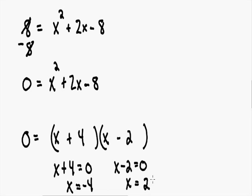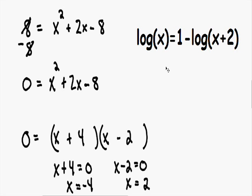So we have x = -4 and x = 2, but are these both valid solutions? We need to double check that these solutions don't make any of the logarithms contain a negative number inside the parentheses. Plugging in x = -4 into the first log gives log of negative 4. You can never have a negative number inside a logarithm, so x = -4 is not valid and we can cross it out.